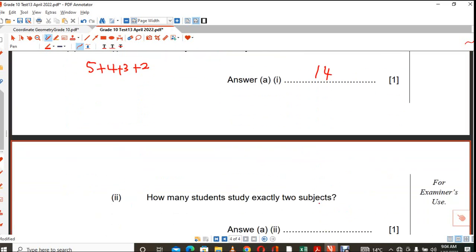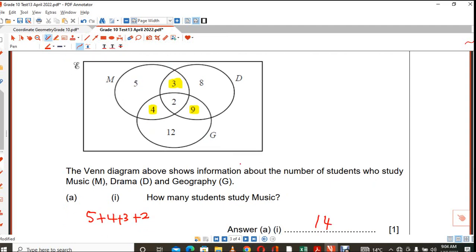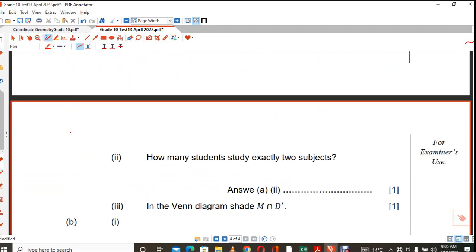How many students study exactly 2 subjects? So what you're looking for? You're looking for these 3 here, that 4 there, and that 9 there. Those people, they study exactly 2 subjects. Like these 3, they study music and drama. These 9, they study geography and drama. And these 4, they study music and geography. That's exactly 2. So you had to add all of them together. So that's 9 plus 3 plus 4. This one also, a lot of people got it correctly. But the shading now. Horrible.